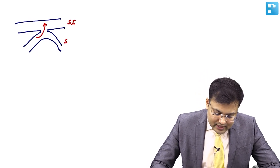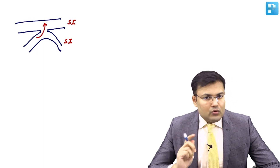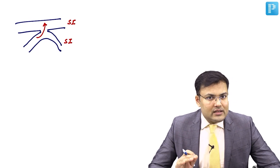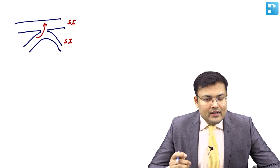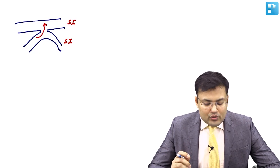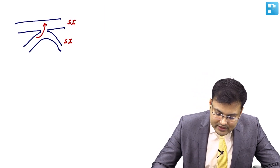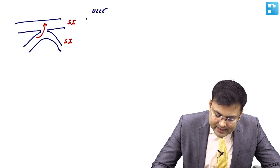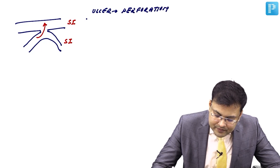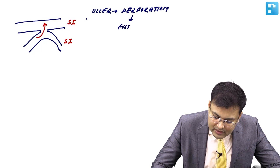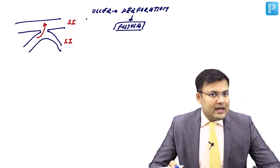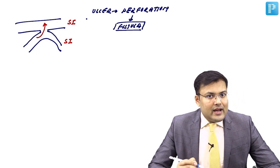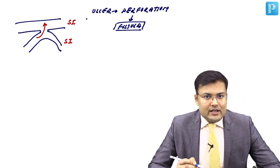Because of ulcer there can be perforation, and because of this perforation there can be fistula formation. In Crohn's disease, the three types of fistula are: enteroenteric, enterocutaneous, and enterovesical fistula.